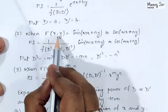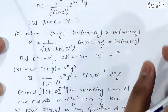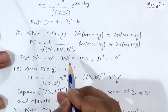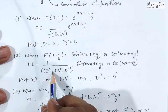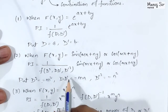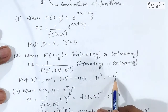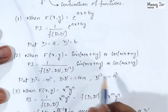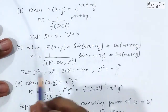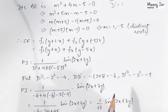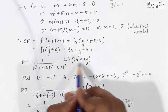When f(x,y) = sin(mx + ny), which is a trigonometric function, here we have sin(2x + 3y), so m = 2 and n = 3. For PI = 1/f(D², DD', D'²), we replace D² with -m², DD' with -(m×n), and D'² with -n². Here m is the coefficient of x and n is the coefficient of y.